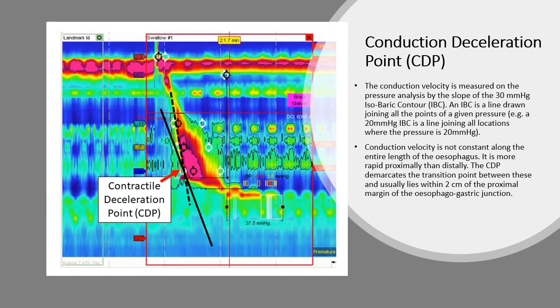The conduction velocity is measured on the pressure analysis by the slope of the 30 mm isobaric contour. An isobaric contour is a line drawn joining all the points of a given pressure. For example, a 20 mm isobaric contour is a line joining all locations that the pressure is 20 mm of mercury.